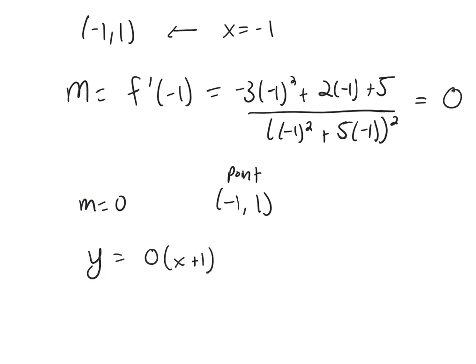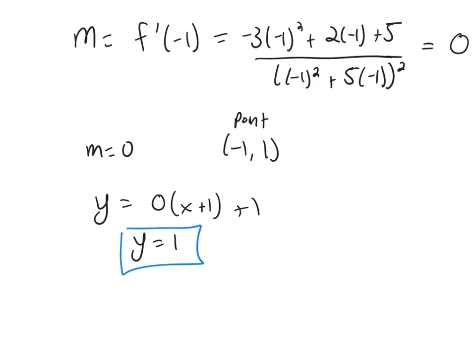0 times x plus negative 1 plus 1, or just y equals 1. And that would be the equation of my tangent line right there. It's a horizontal line because the slope is 0.